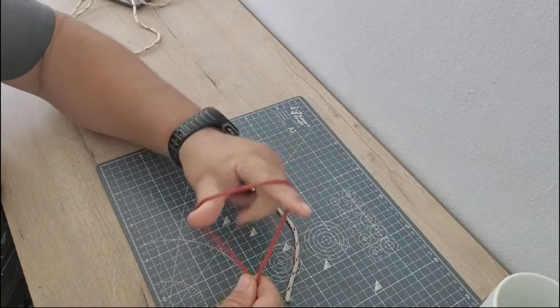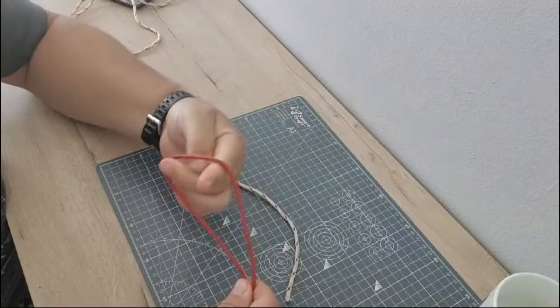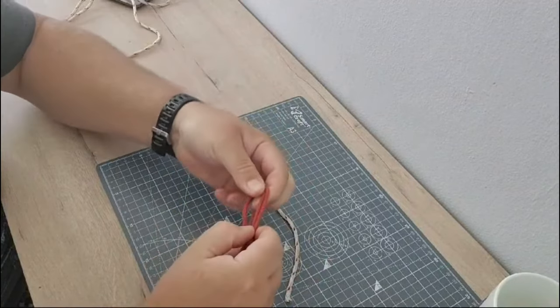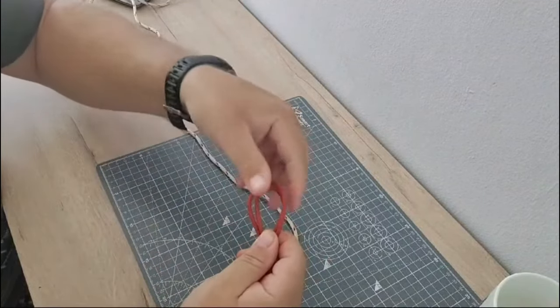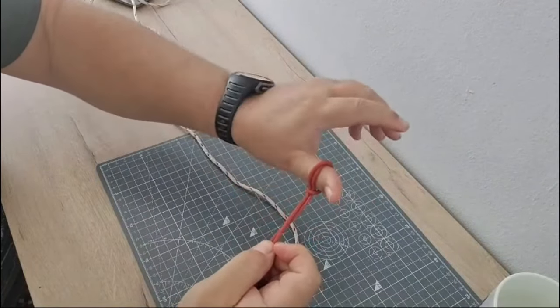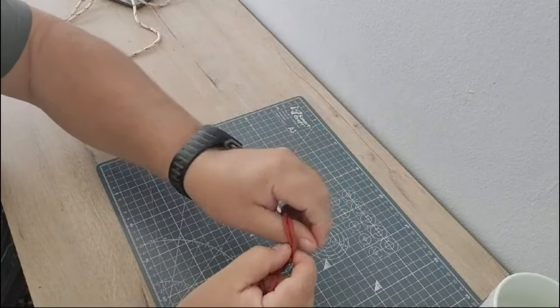First you make a loop like this, put your two fingers through the loop, and then just take it around the loop. Now you have a sliding knot. You can see here the knot can slide. There you go, sliding onto my thumb.